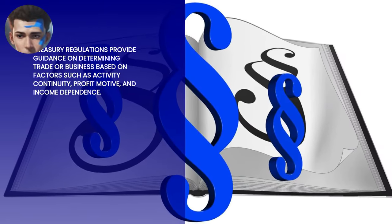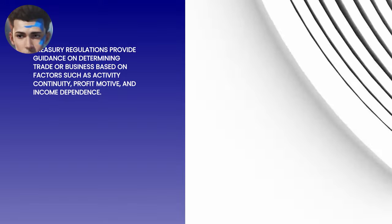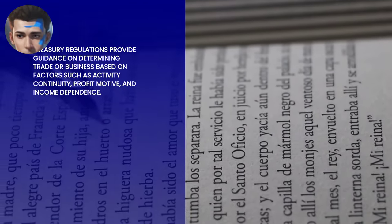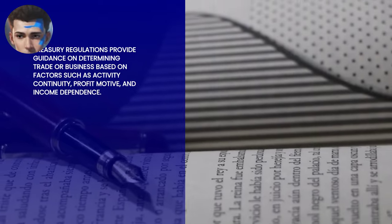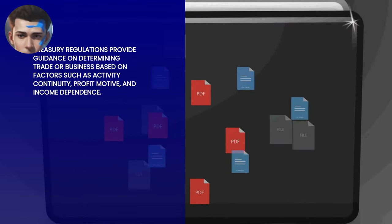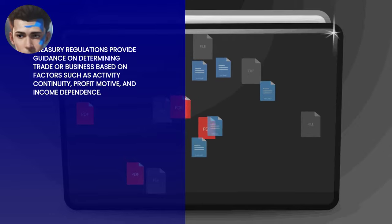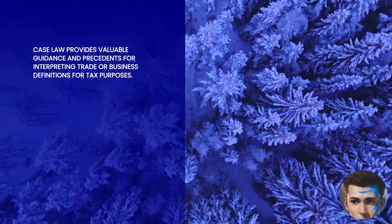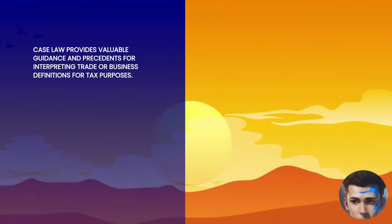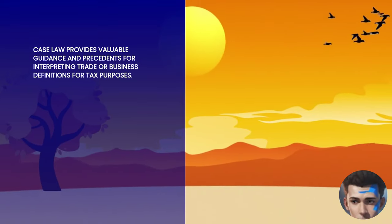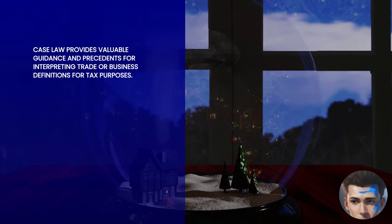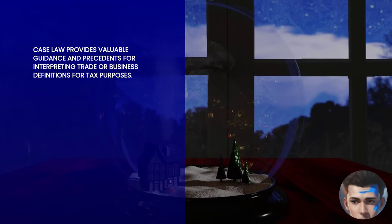The Treasury Department issues regulations that interpret and clarify the code. These regulations often provide additional details on what constitutes a trade or business, considering factors like continuity and regularity of activity, profit motive, intent to engage in the activity for income, and dependence on the activity for livelihood. Courts have also weighed in on the definition of trade or business through various cases, offering further guidance and precedent. Therefore, the definition of a trade or business for tax purposes is multifaceted and nuanced.